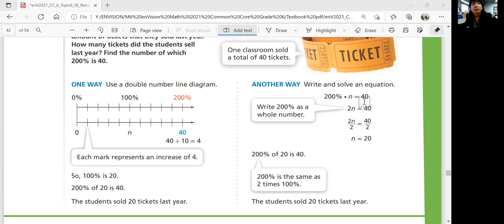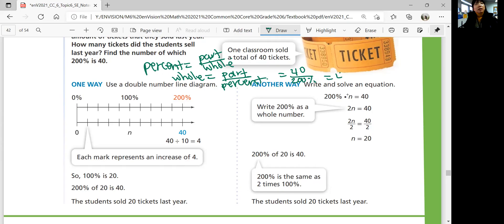Another way you can write an equation. 200%, that's the part times the whole is equal to... The percent times the whole is the part. So again, remember that percent is part divided by whole. So in order to find whole, whole would be multiply whole on both sides and then divide percent on both sides and you get part divided by percent. So the whole would be part, which is 40 divided by percent 200%. And so that's really 40 divided by 2 in decimal, right? So that's 20. There you go. So the students sold 20 tickets last year.